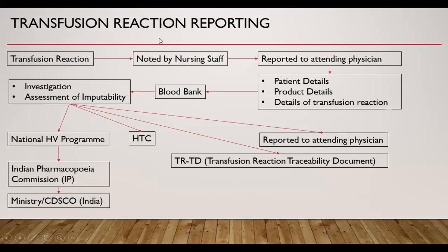When a transfusion reaction occurs, it is noted by nursing staff and reported to the attending physician, who collects patient details, product details, and details of the transfusion reaction. These are reported to the blood bank, which investigates the reaction and assesses imputability, then reports back to the attending physician. This is entered into the Transfusion Reaction Traceability Register or document, discussed in the Hospital Transfusion Committee, and reported to the National Hemovigilance Program. The National Coordinating Center, NIB in India, reports to the Indian Pharmacopoeia Commission, and then to the Ministry or CDSCO to frame guidelines.